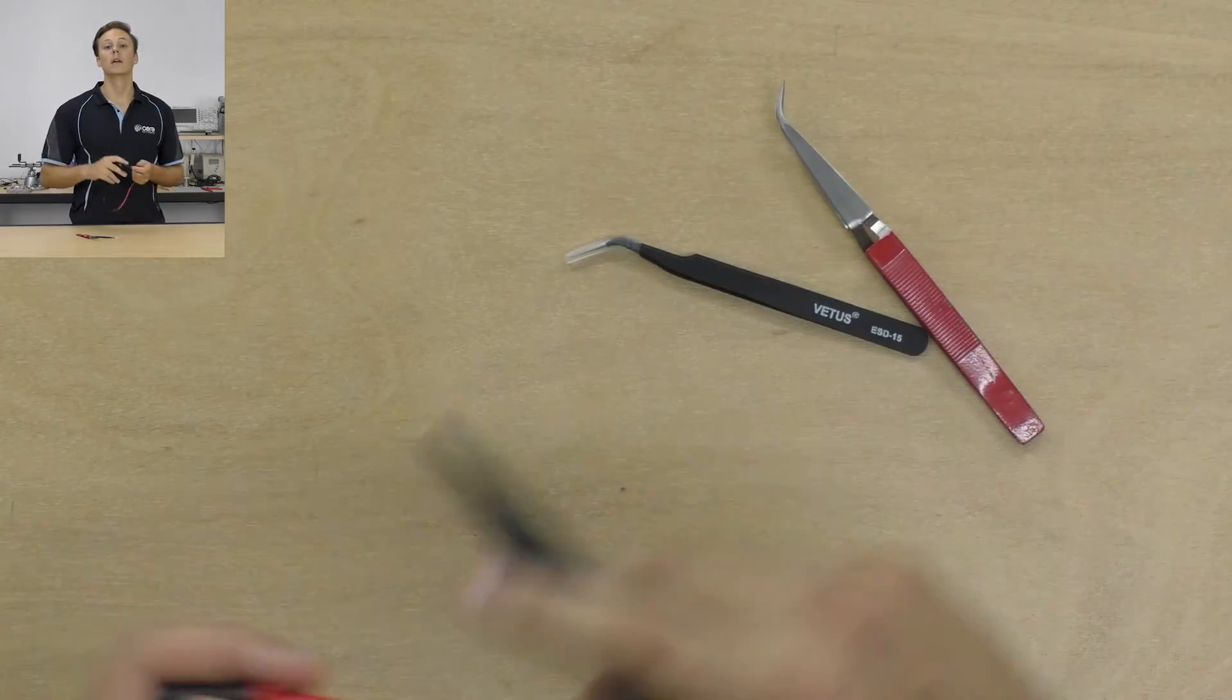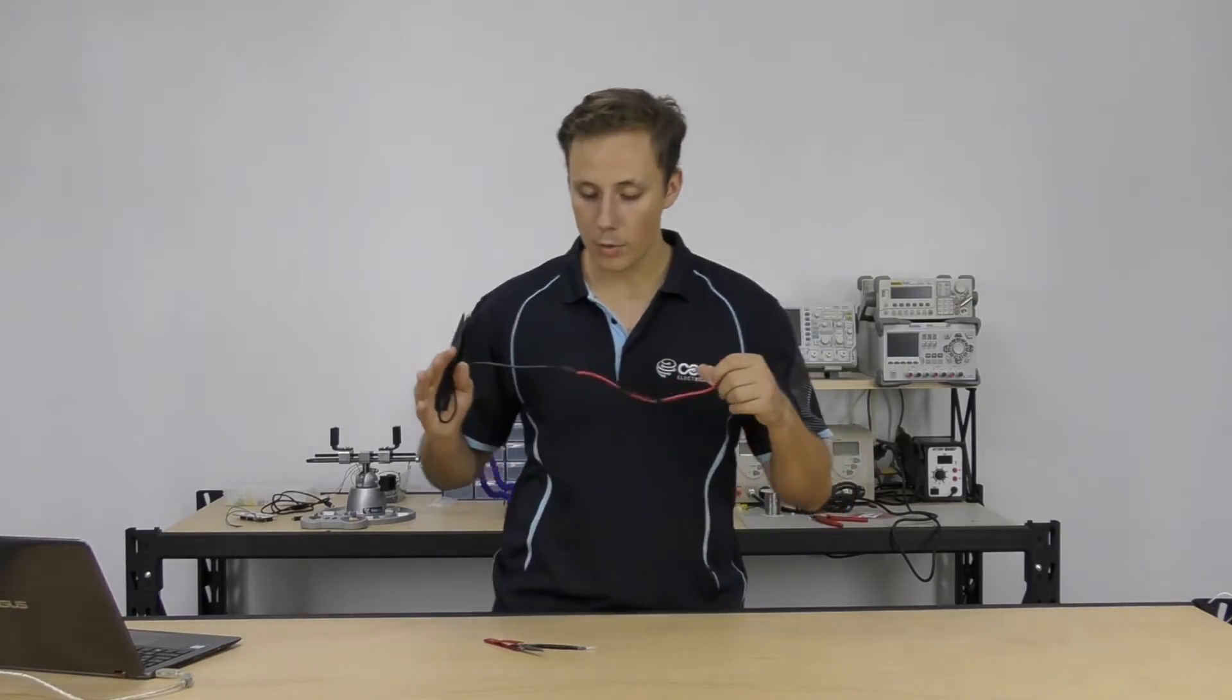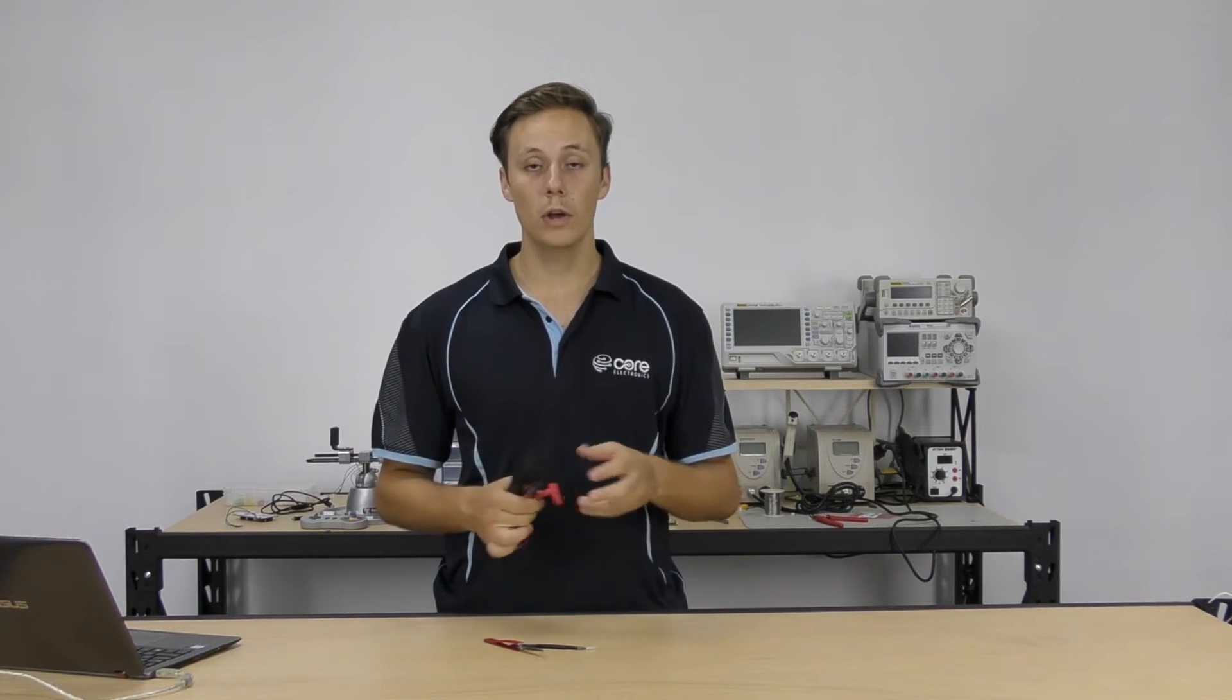So that's it, guys. A quick wrap on some of the best tweezers you can get for your workbench, how and why you should use them, a few different varieties. Generally, getting a whole set is the best way to go. These will only cost you five or six dollars each, so you can grab a couple and keep some in the toolbox on the workbench wherever you go. That's all for today, guys. Have a good one.